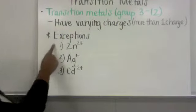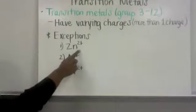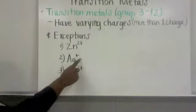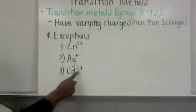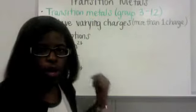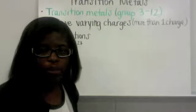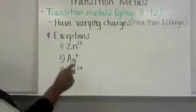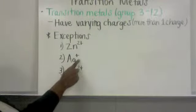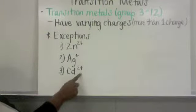Some exceptions to these rules include zinc which has a 2+ charge, silver which has a +1 charge, and cadmium which has a +2 charge. So those three will never have another charge. They will never form a different amount of electrons. It will always be 2+ for zinc, 1 for silver and then 1 for cadmium.